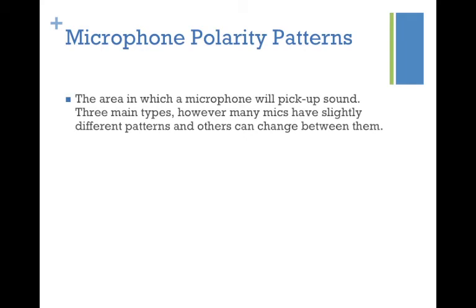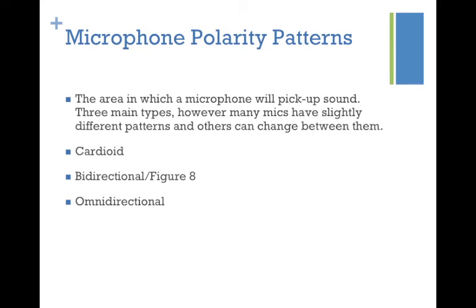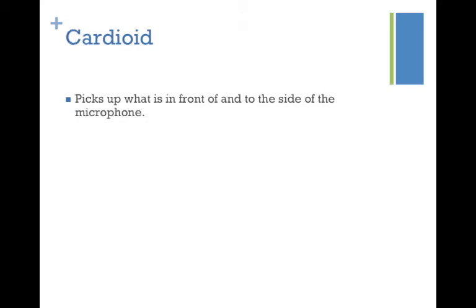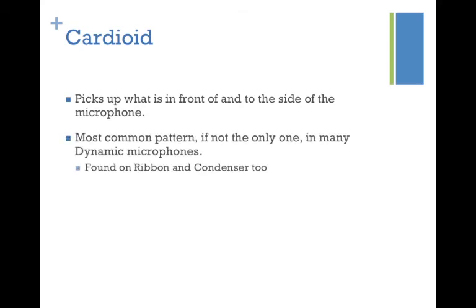A microphone can pick up sound in certain directions around it — not always just directly in front. A polar pattern tells us where sound will be picked up by that microphone. There are three main types, though patterns can vary slightly and some microphones can switch between them. The three are: cardioid, bi-directional (also called figure-eight), and omni-directional. A cardioid picks up what is in front of and to the sides of the microphone. It's the most common pattern — if not the only one — in many dynamic, ribbon, and condenser mics.